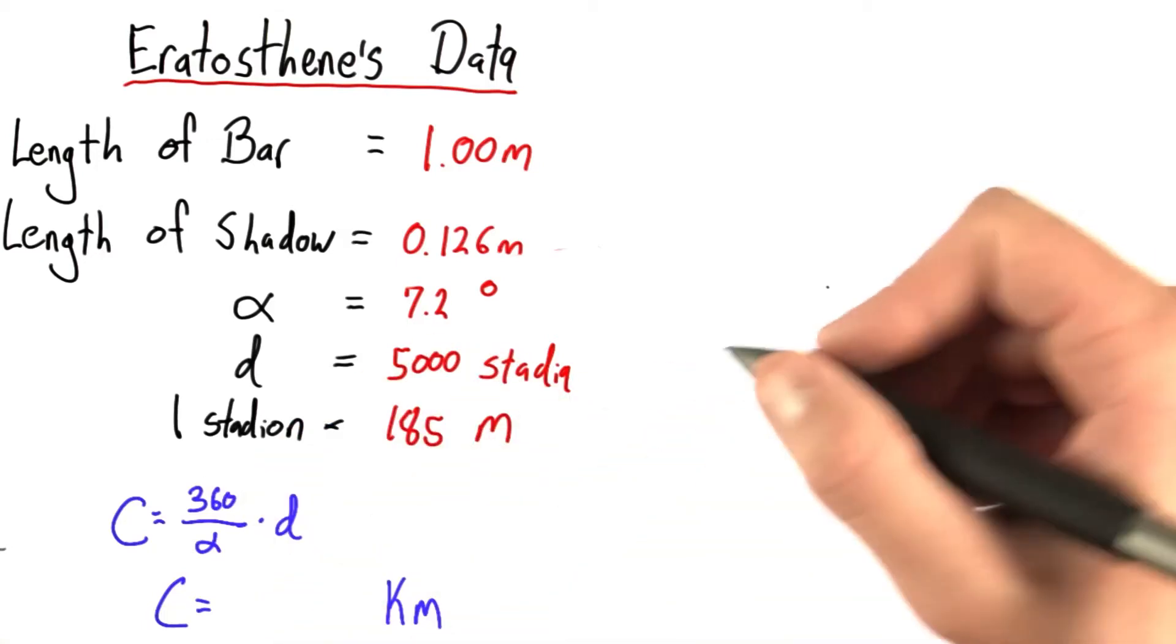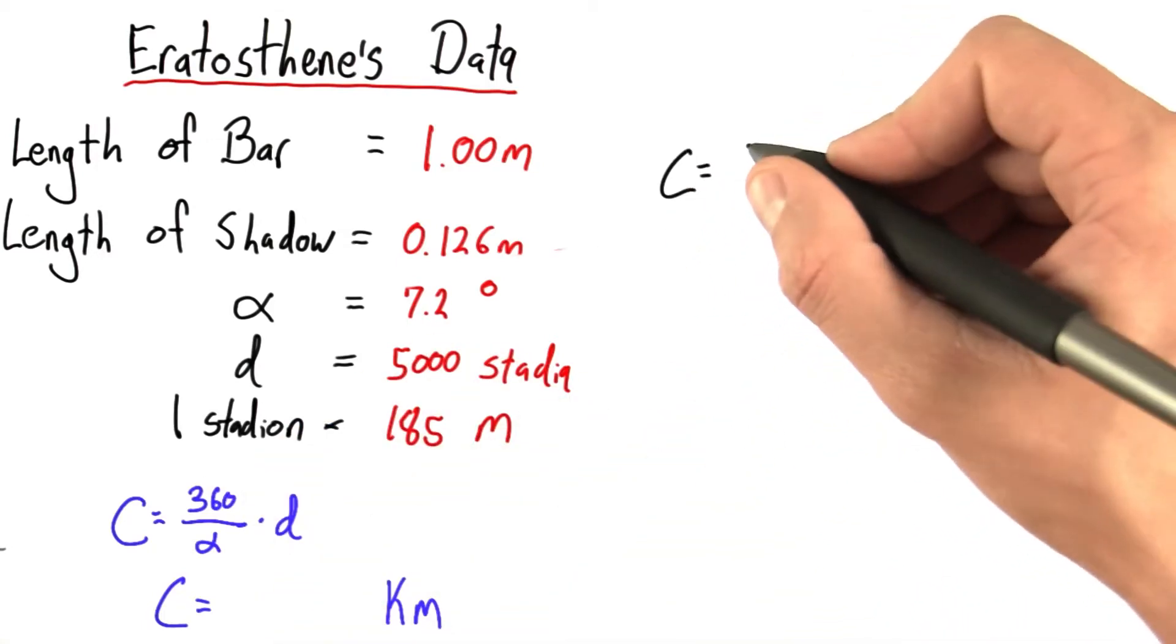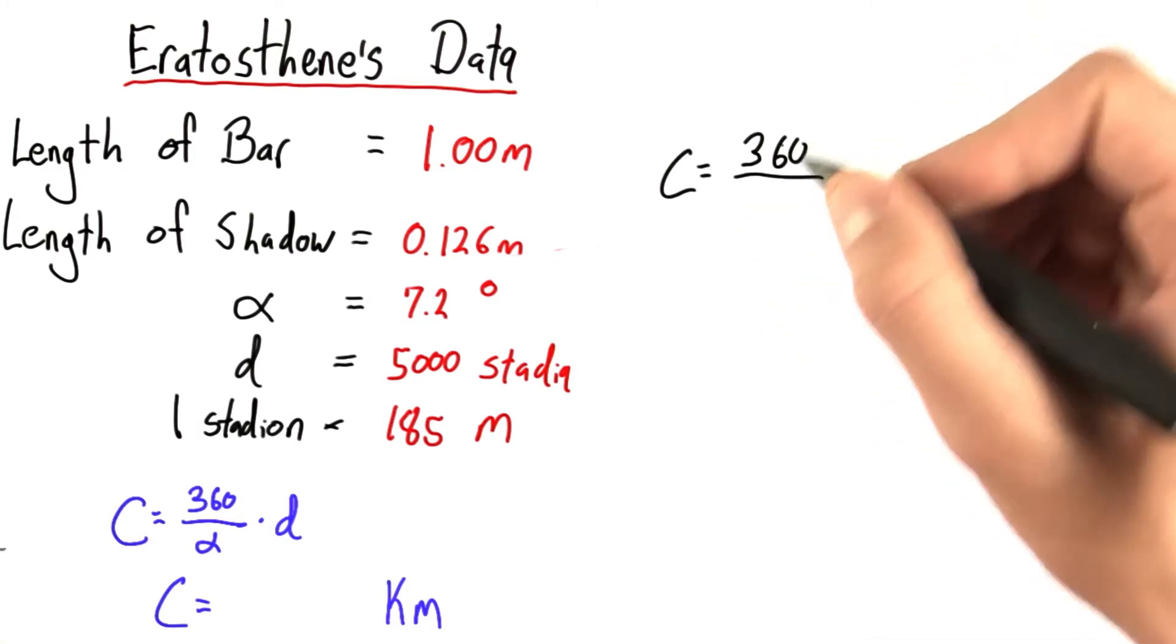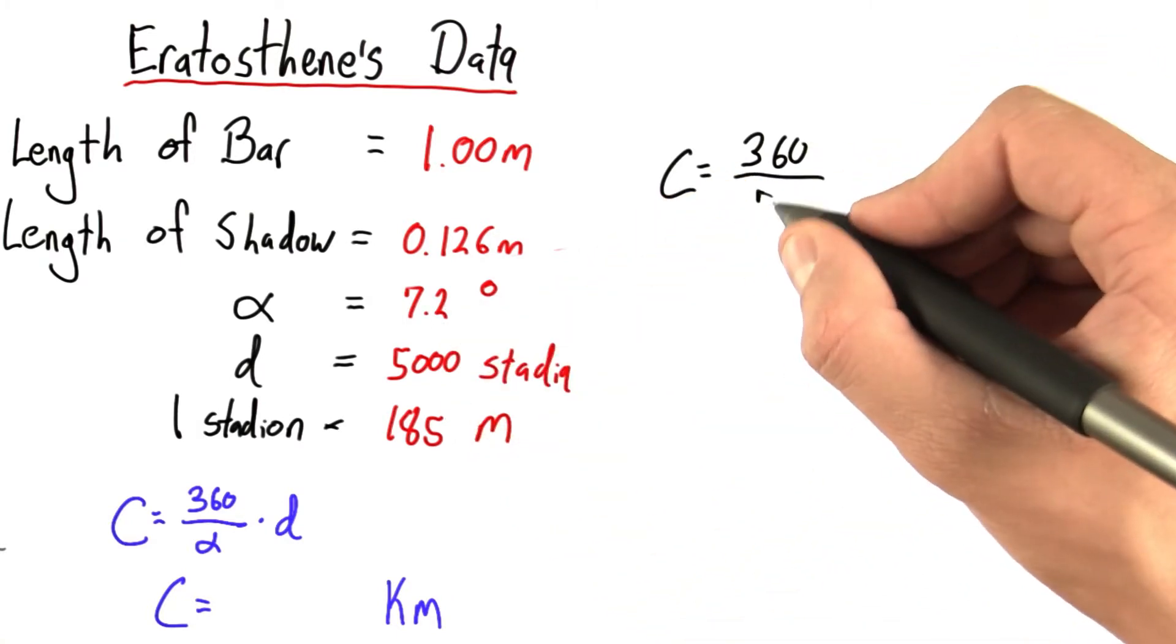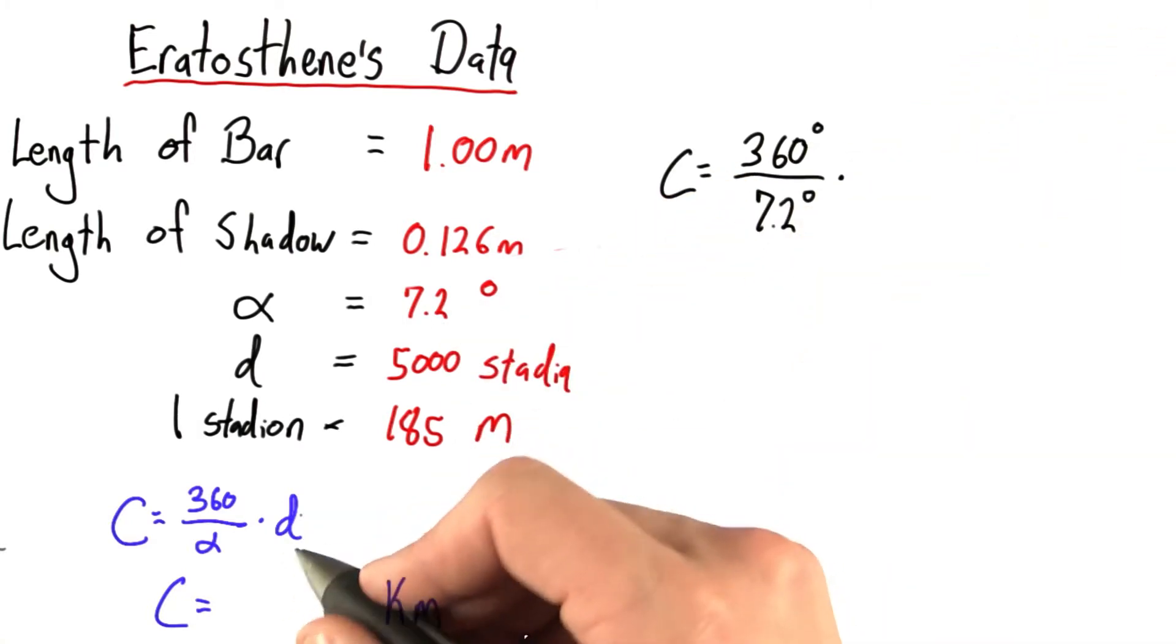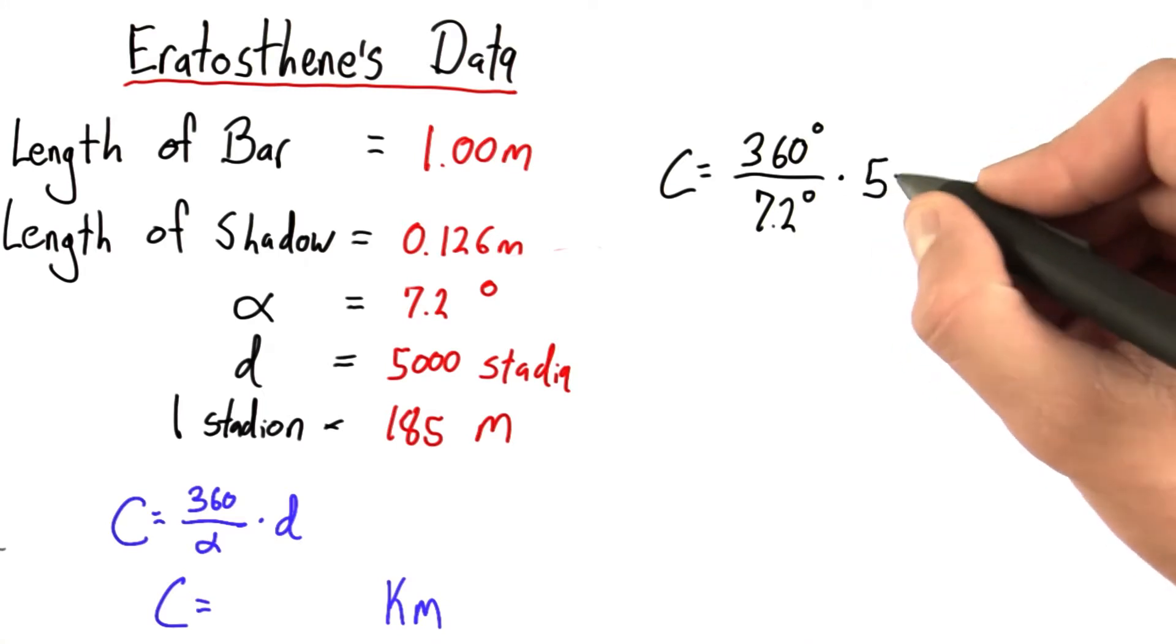Well, to solve this, we can plug in C equals 360 over alpha, which was 7.2 degrees, times D, which is 5,000 stadia.